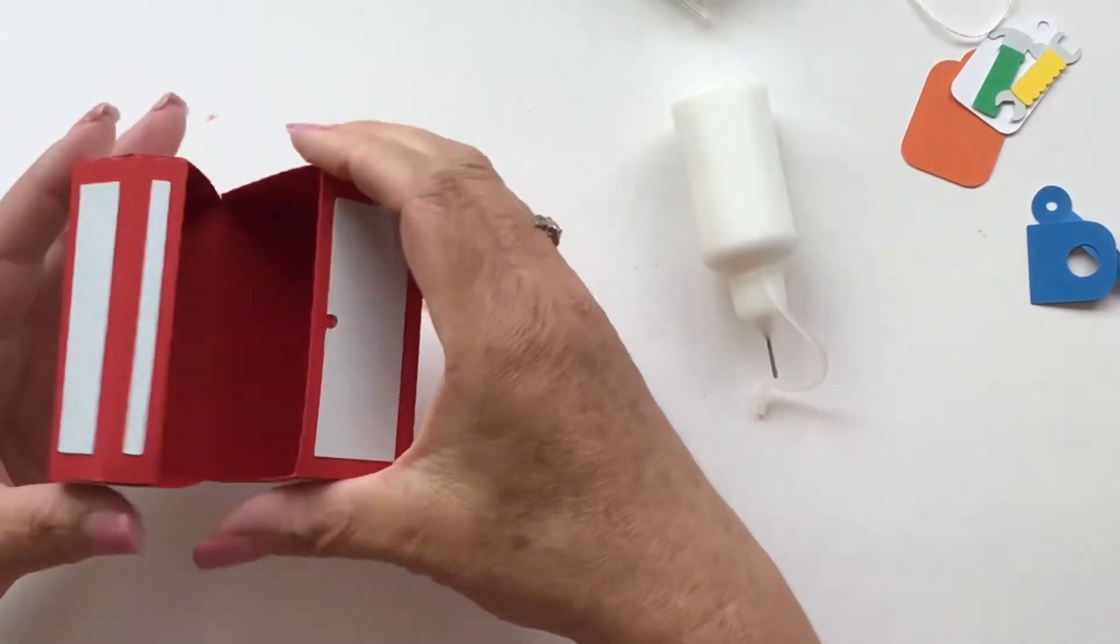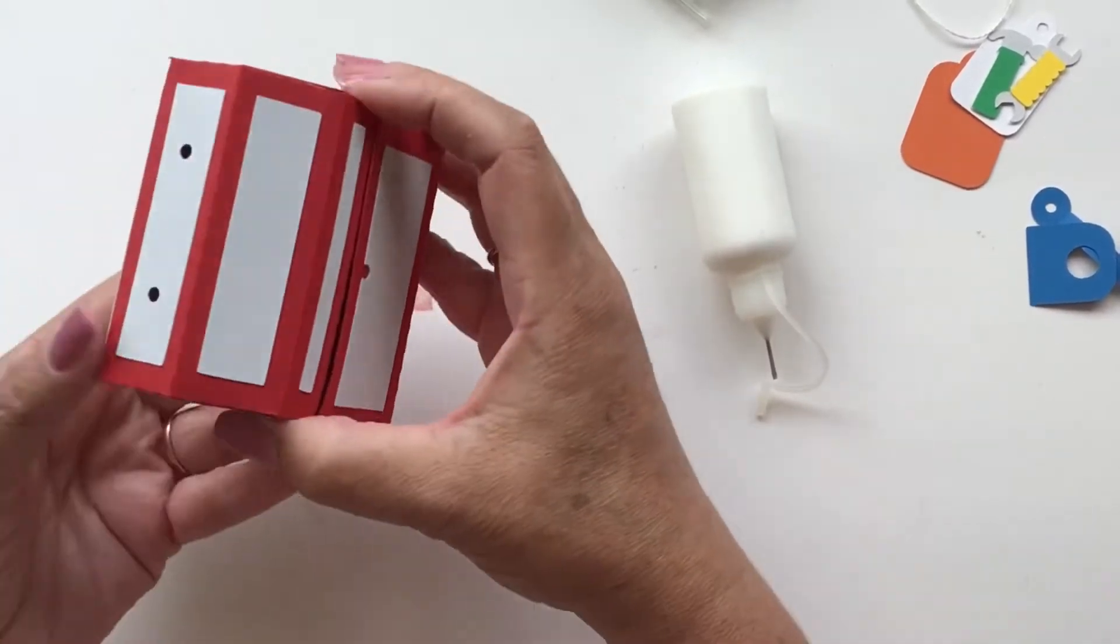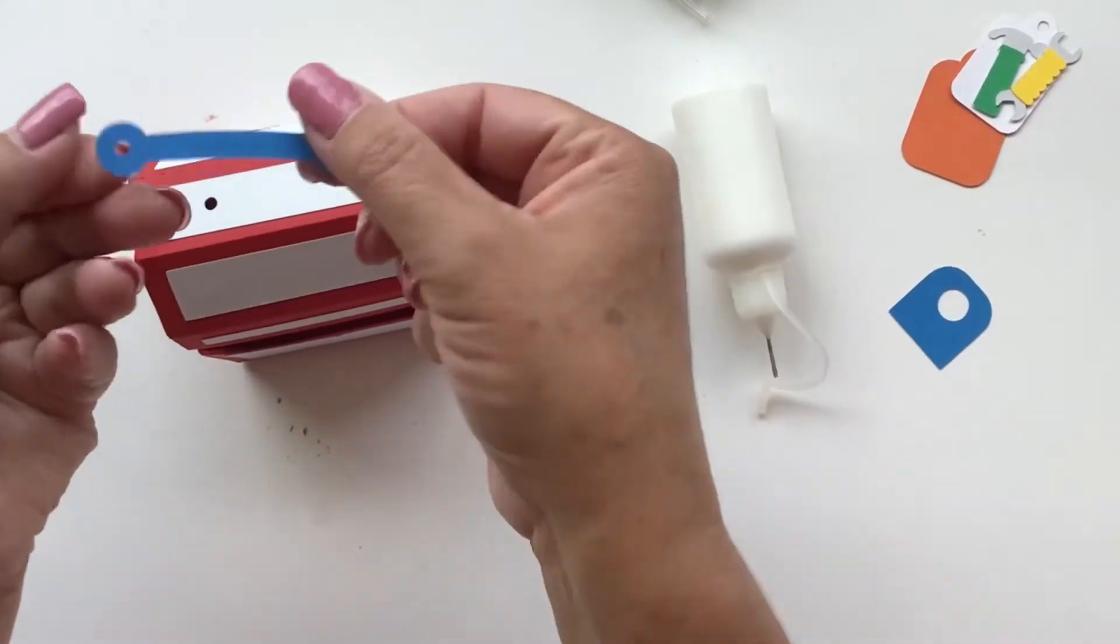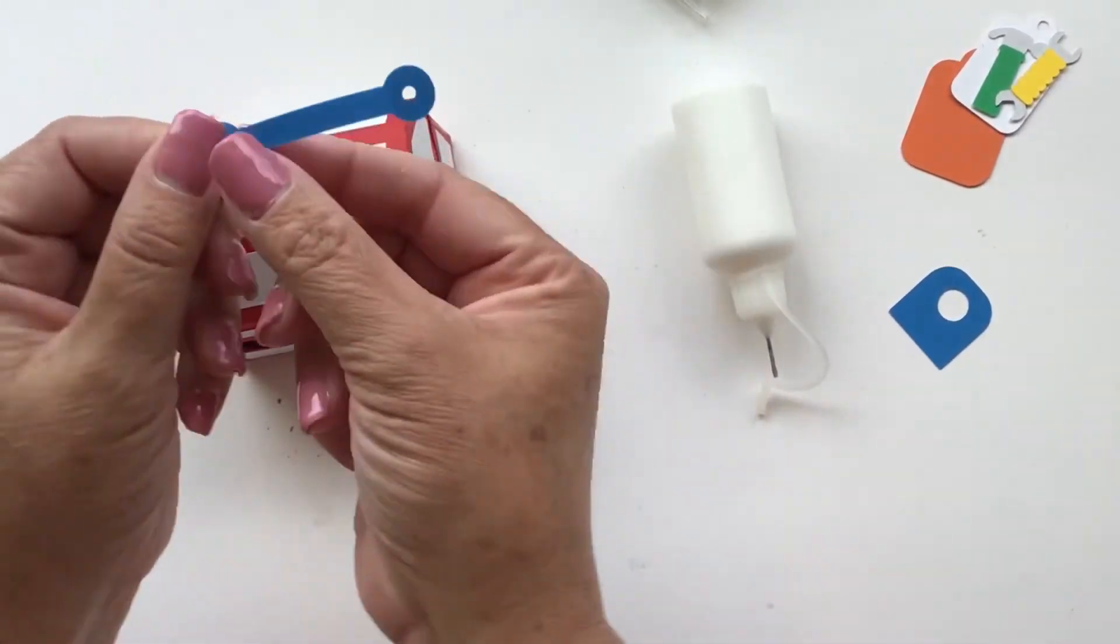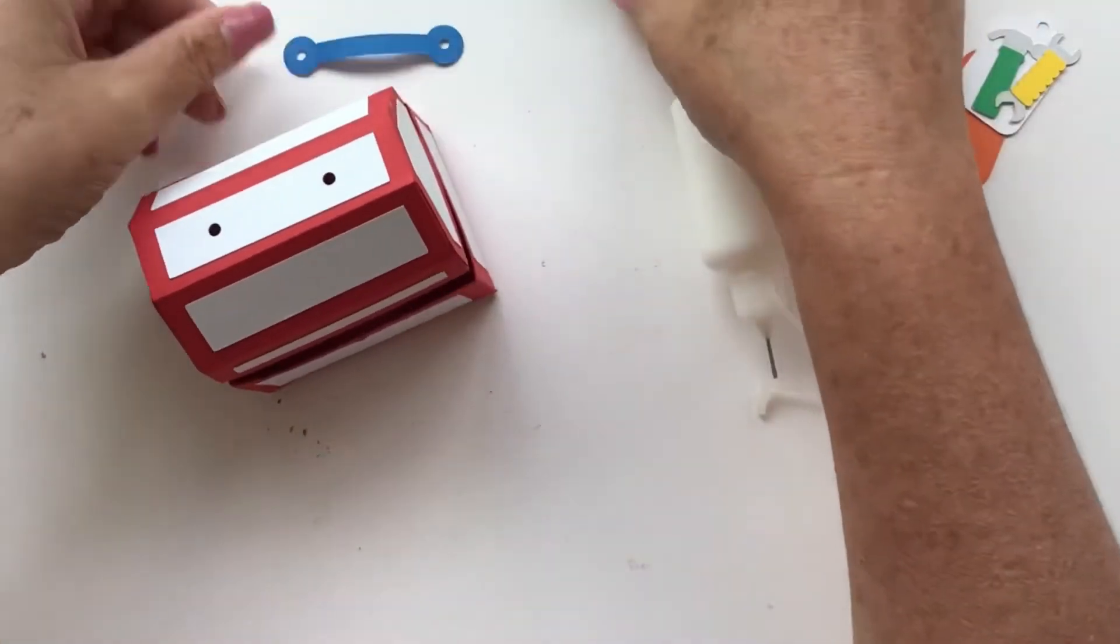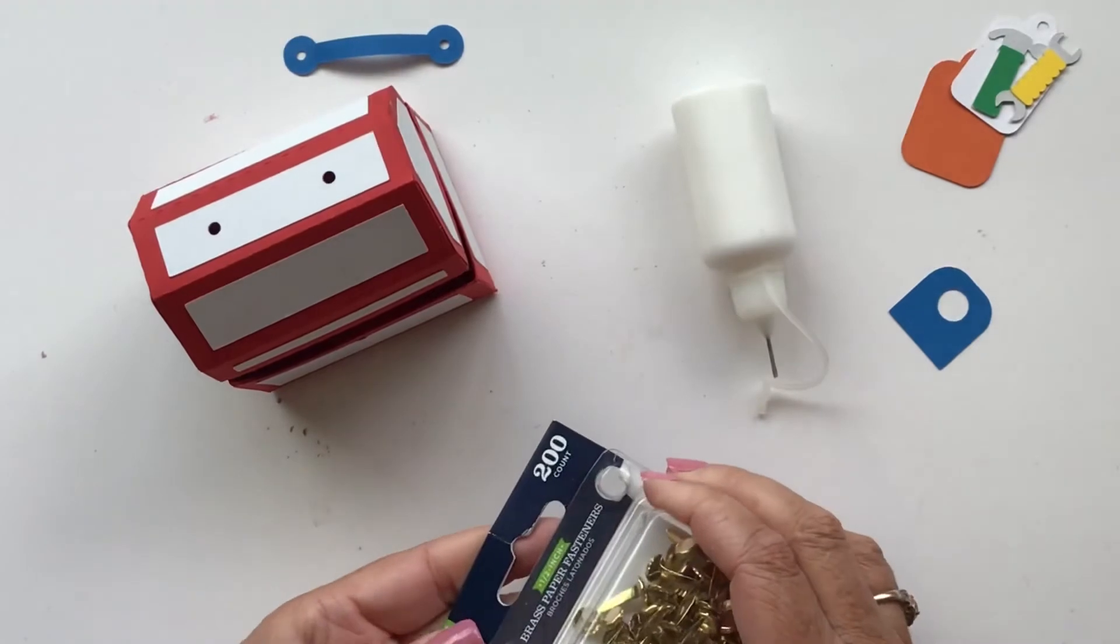Okay, so there is the box, the little chest. So now I want to add my handle. So there's your handle, it has the two holes, and I'm just going to curve it a little bit with my finger and thumb. And then get these two brads out.